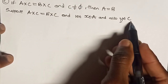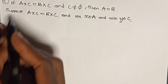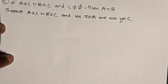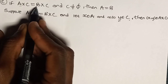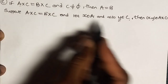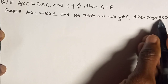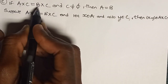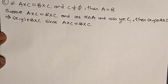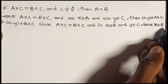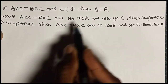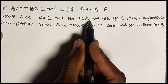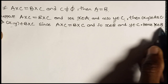Suppose A cross C is the same as B cross C, and let X be an element of A and Y be an element of C. Then the pair (X, Y) is an element of A cross C. Since A cross C is the same as B cross C, and we know (X, Y) is an element of A cross C, then (X, Y) is also an element of B cross C. So X is in B and Y is in C, hence X is in B. Therefore A is a subset of B, since X an element of A implies X an element of B.